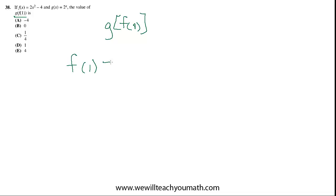So f of 1 is 2 times 1 squared minus 4, which is 2 minus 4, which is negative 2. And then we'll just find g of negative 2, which is 2 to the negative 2.